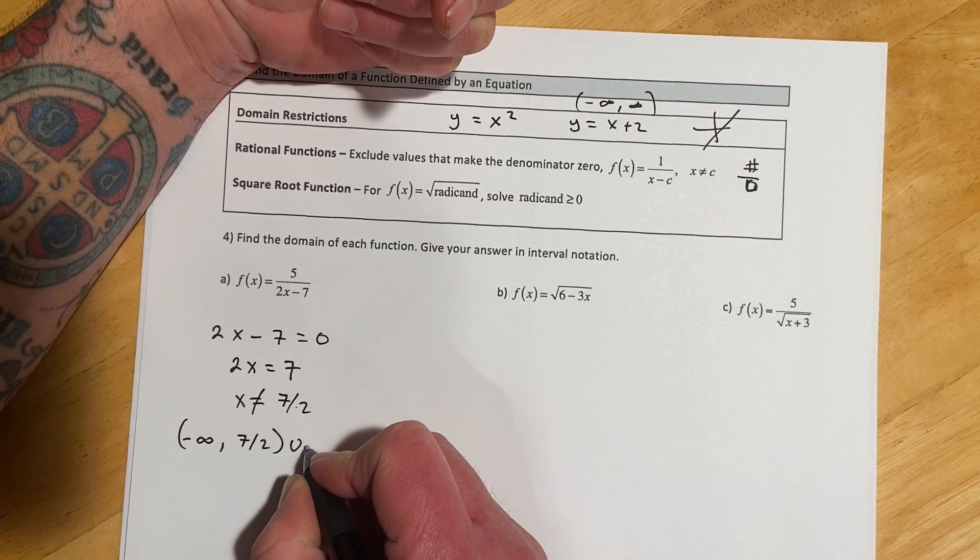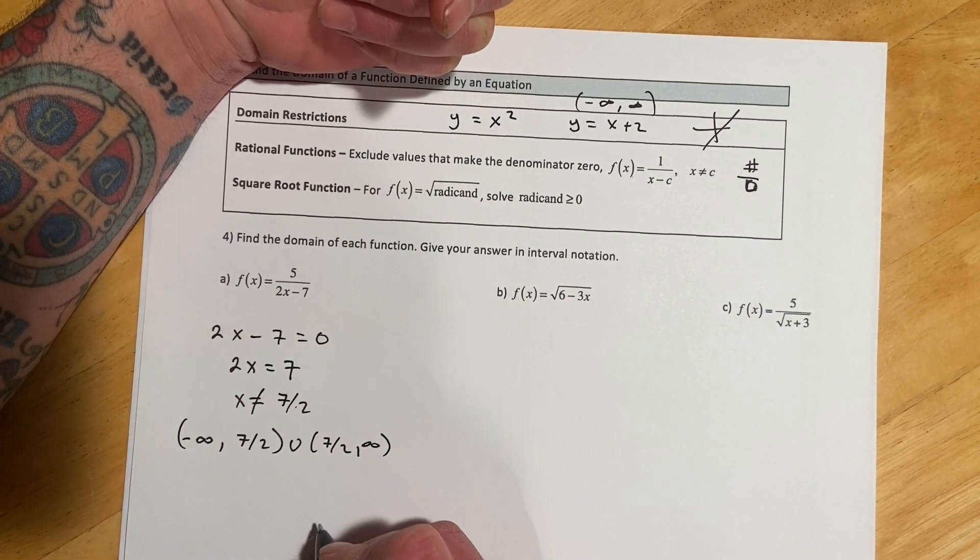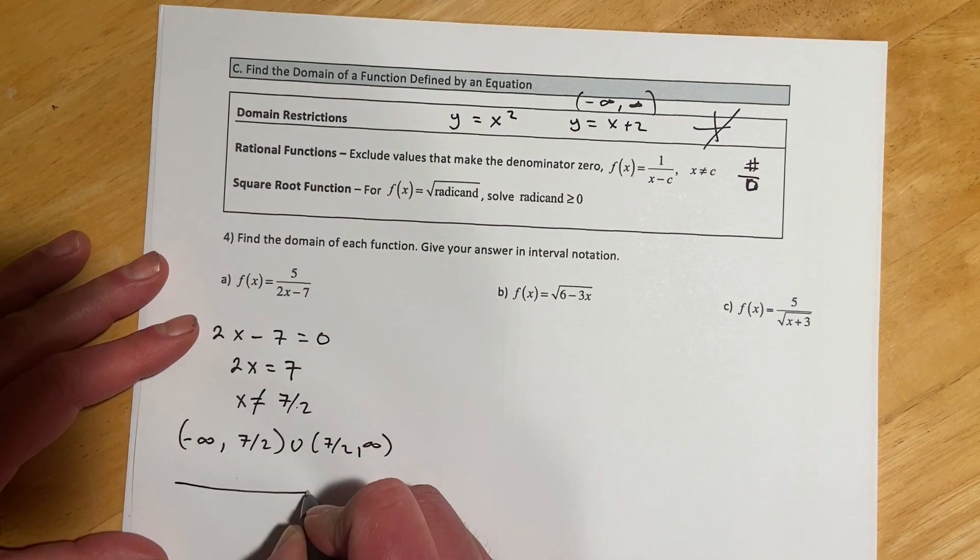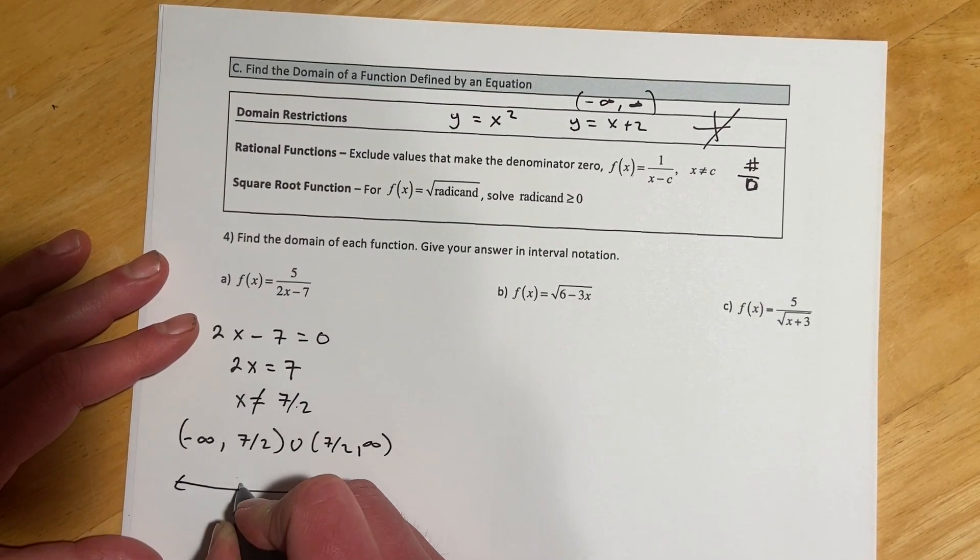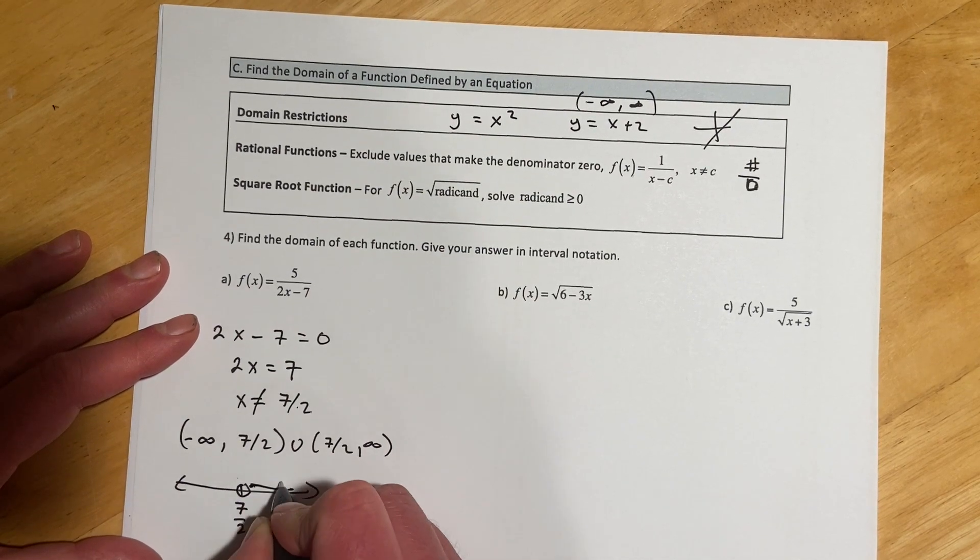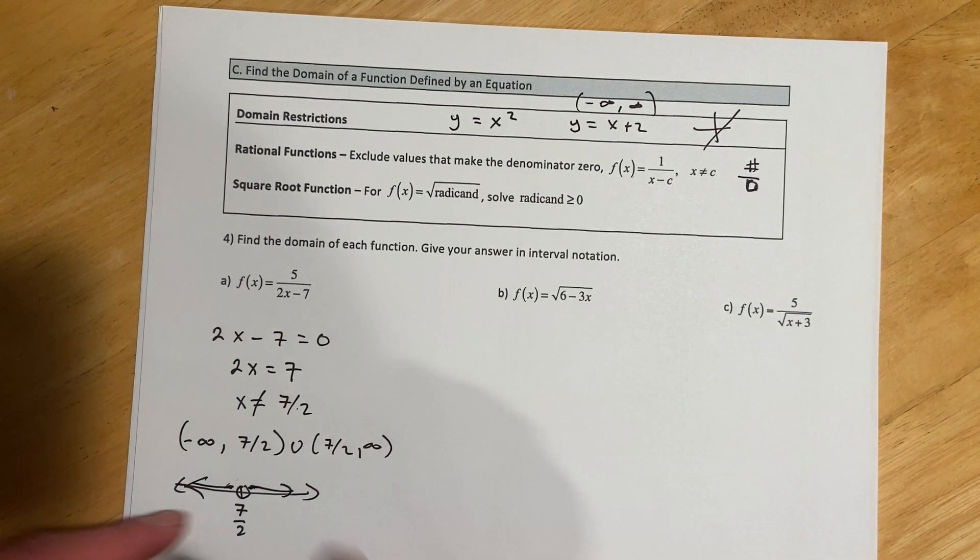That's a bad number. Then we're going to pick back up at 7 halves again, and then go out to infinity. So in terms of like a line graph, what we did there was basically said 7 halves, no, but everything except 7 halves, yes. So that's what that means.